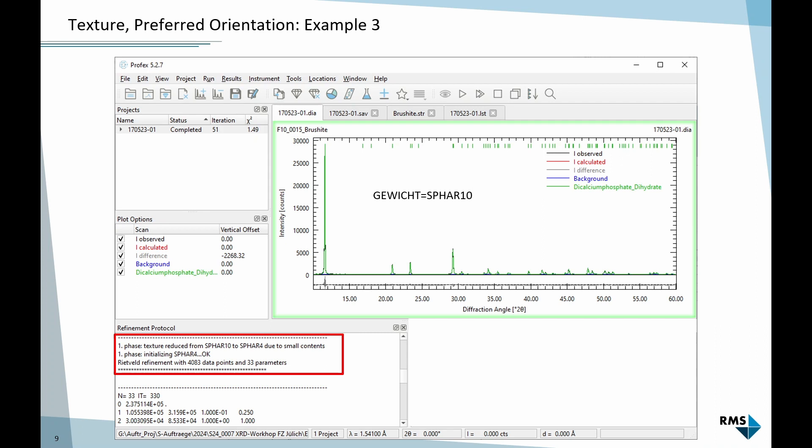This sounds maybe a bit annoying that BGMN interferes with what we define in the project, but it also means that we can add a default refinement of texture. Even if the phase only occurs in a very small fraction, a few percent, even then we can leave this SPHAR keyword in the structure file and BGMN will decide, I have a very weak signal, I will reduce the texture complexity. We don't have to think about how good is the signal of this specific phase. We only have to decide what texture model do we want to use based on the crystal shape or the cleavage, and BGMN will take care of the rest.